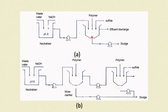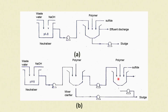Sludge that settles at the bottom of the holding tank is removed via pump to a sludge drying bed. In an alternative system, wastewater is neutralized with sodium hydroxide, taken to a mixing tank where polymer is added, solids settle in a clarifier, the clear liquid is pumped to another reactor where sulphide and polymer are added, precipitate forms, clear liquid exits from the top, and sludge is drawn from the bottom for proper disposal.